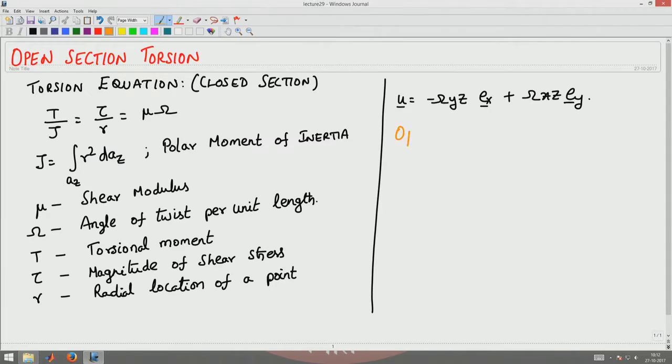The displacement field now will change for open sections. The displacement field is given by u equals sigma z e_x plus sigma x z e_y plus function psi, which is a function of x and y, e_z.